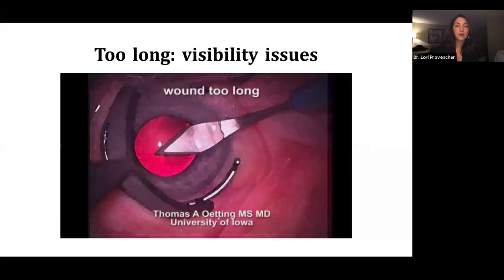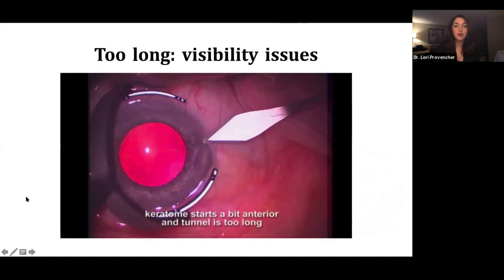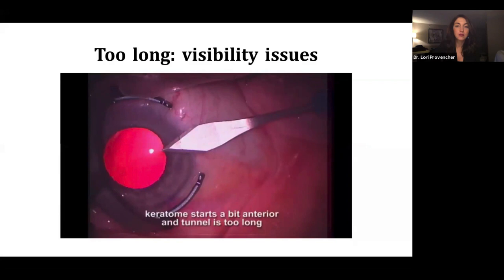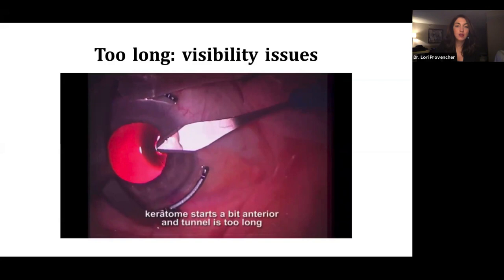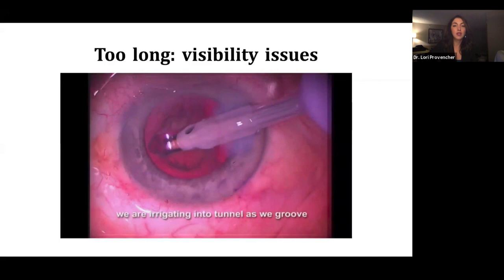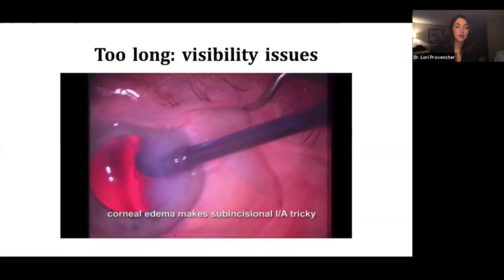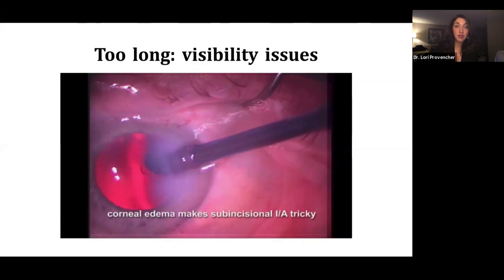Here's a video that Dr. Tom Oding was allowing me to use, and this is a nice example of what happens when your wound is too long. So you see here they're entering a little anterior. And then as they go forward, the tunnel is a little too long. They end up with this rather long wound that is paracentral cornea when it ends. And as they're doing nuclear disassembly and cortex removal, you see how much hydration of the cornea you get, and it really affects your view. So if this happens to a degree, you either need to recognize it early and be quick with your case, or go ahead and make a new wound altogether.